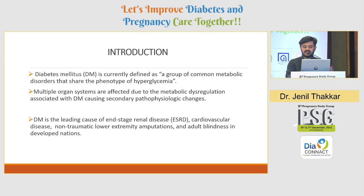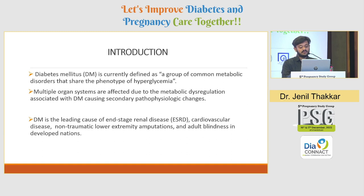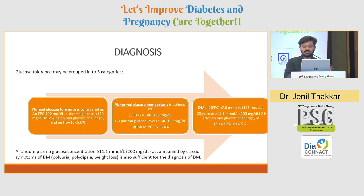Diabetes mellitus is currently defined as a group of common metabolic disorders that share the phenotype of hyperglycemia. Multiple organ systems are affected due to metabolic dysregulations associated with diabetes mellitus, causing secondary pathophysiologic changes. Diabetes mellitus is currently the leading cause of end-stage renal disease, cardiovascular disease, non-traumatic lower extremity amputations, and adult blindness in developed nations.